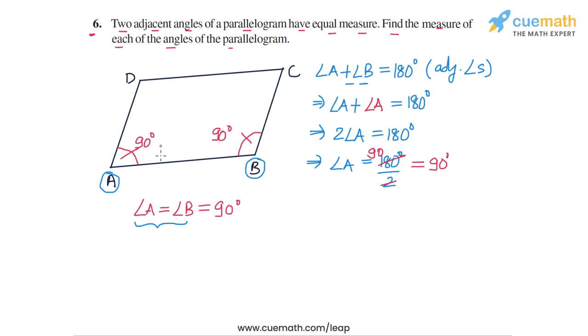This is actually quite straightforward. If the two angles are equal and they are also supplementary, then both of them must be equal to 90 degrees.